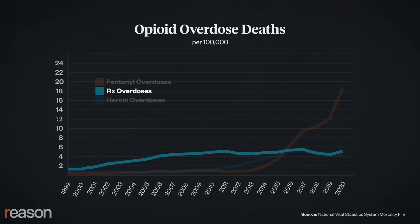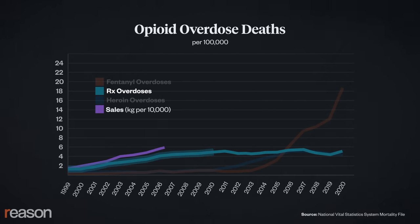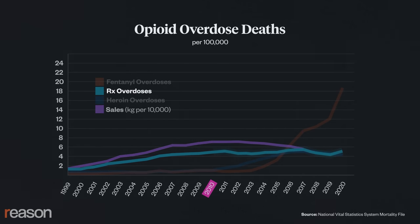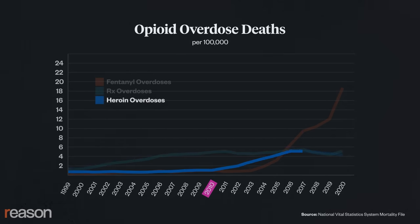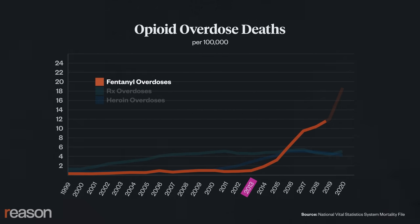For the first ten years, the increase in overdoses correlated with increases in legal prescriptions. But those prescriptions fell after 2010, with no reduction in overdoses. What we did see in 2010 was an increase in illegal heroin use, and in 2013, an even sharper rise in overdoses from fentanyl and other synthetic opioids rarely used in legal medicine.